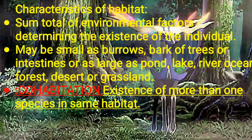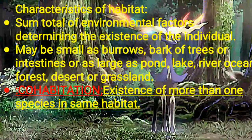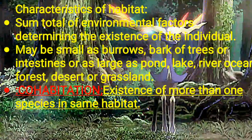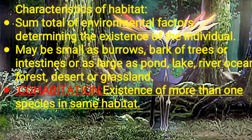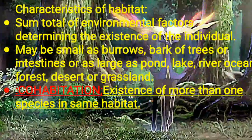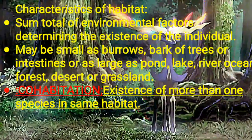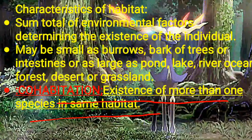Animals generally show habitat specificity — they exist at a particular place and are always found there. Since biology is the science of exceptions, an exception here is the Indian shad Hilsa, which can live in both freshwater and seawater. When an entire community occupies a habitat, this corresponds to cohabitation, which means the existence of more than one species in the same habitat.